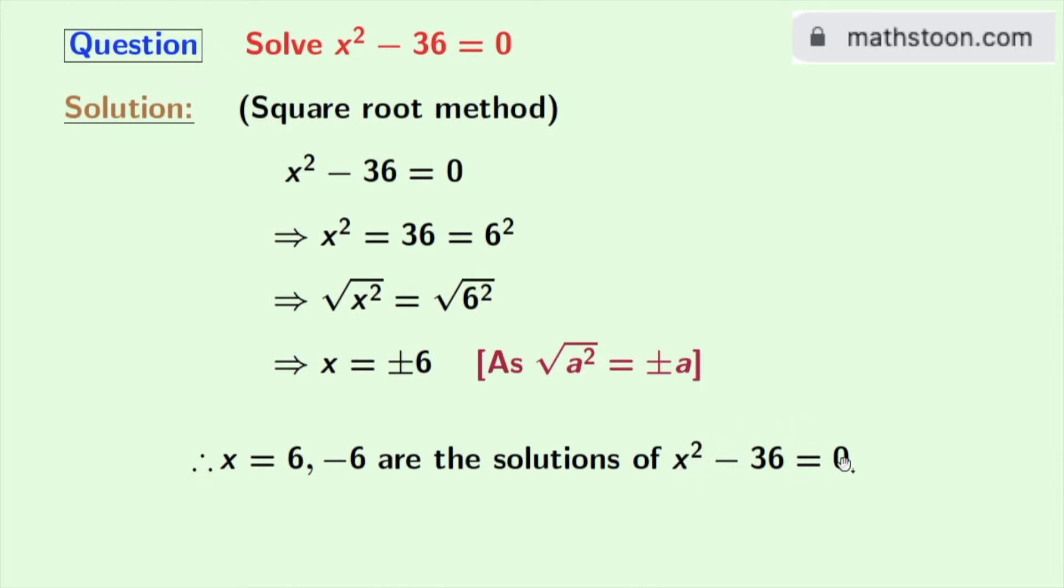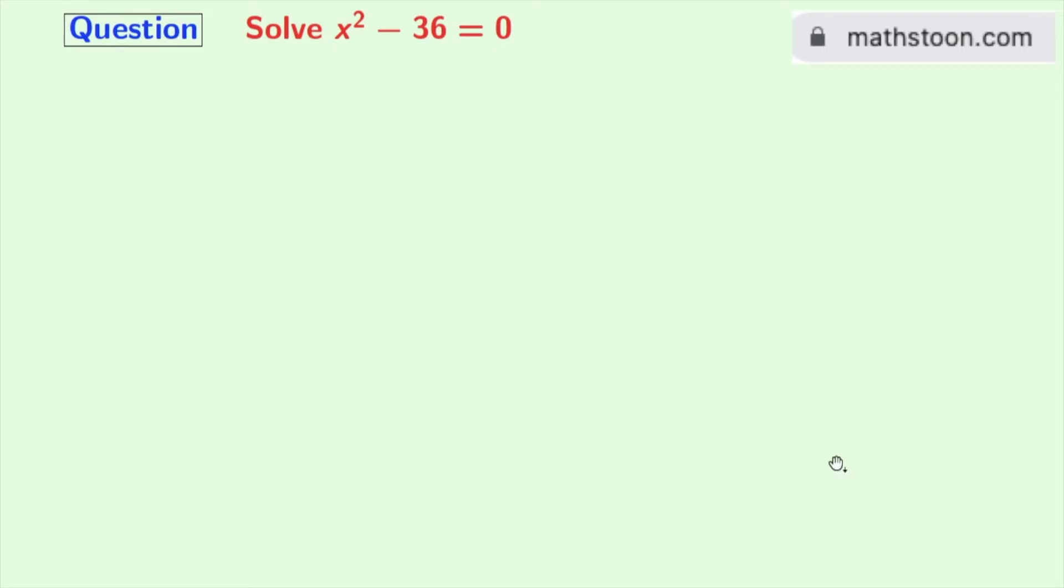Now we will again solve this equation using another method. That method is factorization method. This is our given equation. As 36 is 6 square, so this equation can be written as x square minus 6 square is equal to 0.